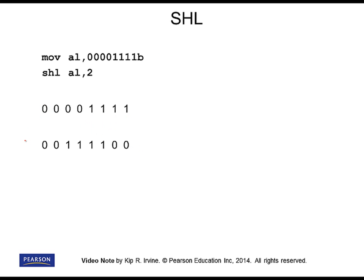So then let's shift by two binary bits. Here's the original number again, and you notice that each bit now is going to move two positions to the left, meaning these two lowest bits are filled with zeros. Meanwhile, the two highest bits of the original number have disappeared. The last bit to be shifted will go into the carry flag, but the bit that was shifted before that will be completely lost.